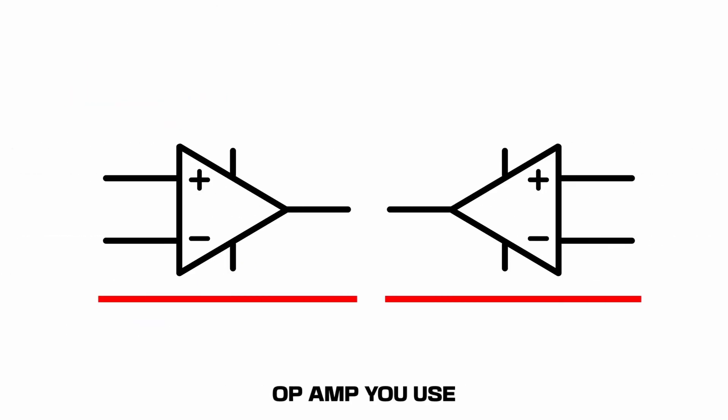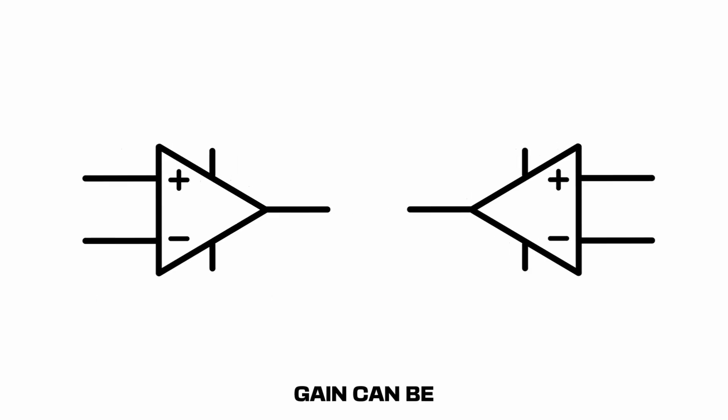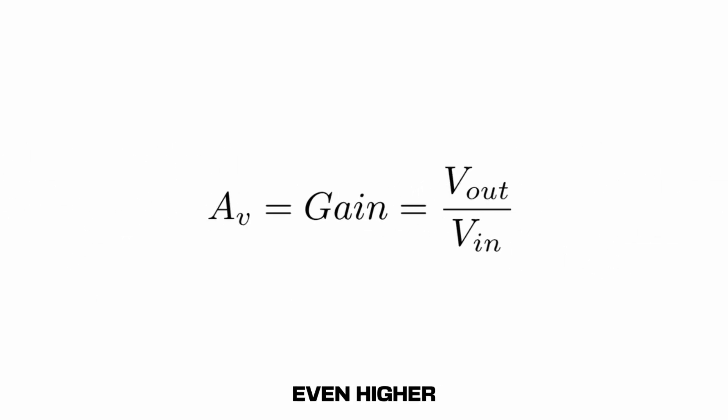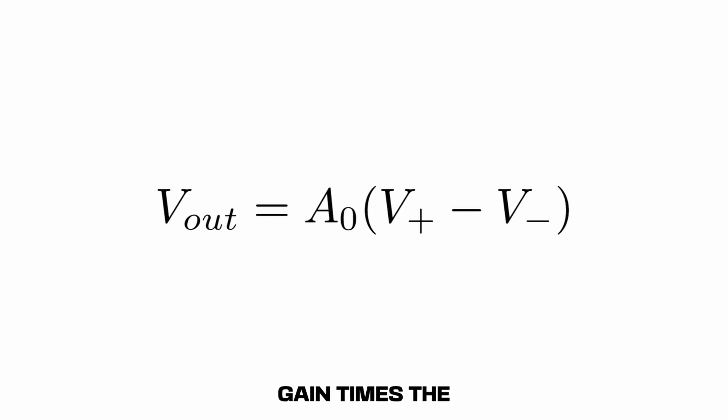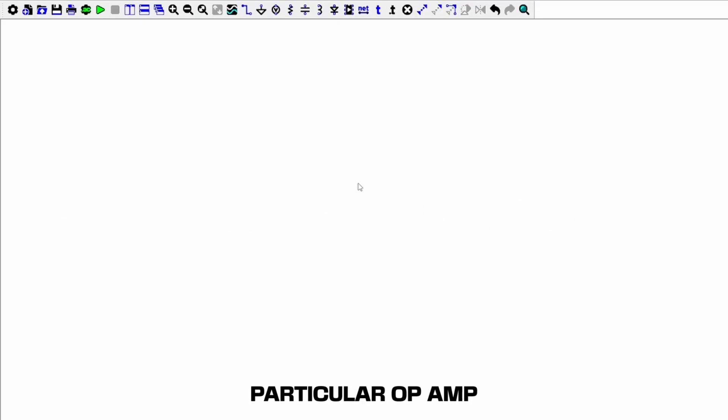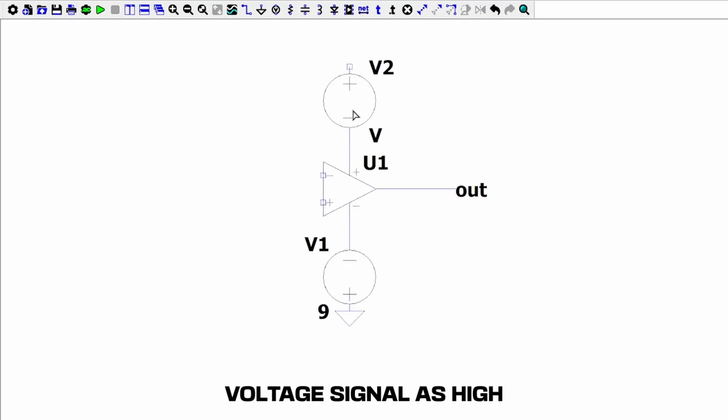Depending on what op-amp you use, the open-loop gain can be in the order of 100,000 to a million or even higher. So our Vout is going to be equal to our open-loop gain times the difference in voltage at the inputs. On this particular op-amp, the open-loop gain is 1 million, so even a tiny difference in one direction will amplify our voltage signal as high as it can go.